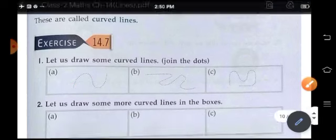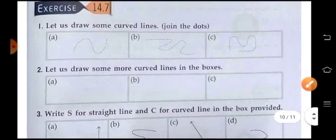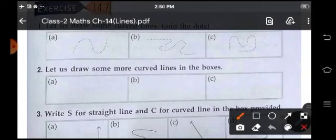So these are irregular shaped. These are not the straight lines. Let us draw some more curved lines in the boxes.